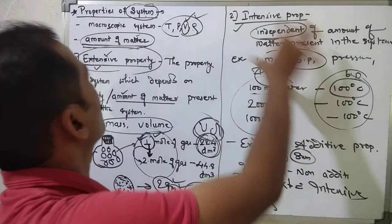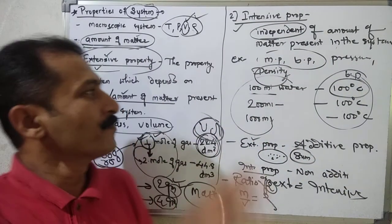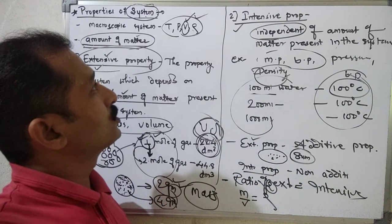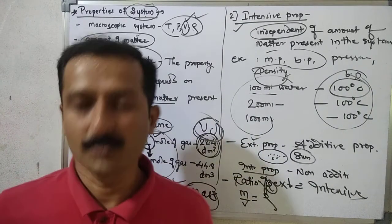This is all about the properties of the system — extensive and intensive. Hope you understood these two types of properties. Thank you guys.